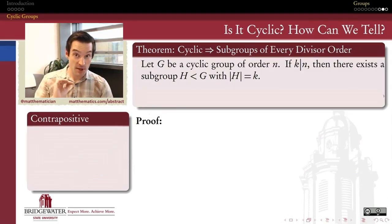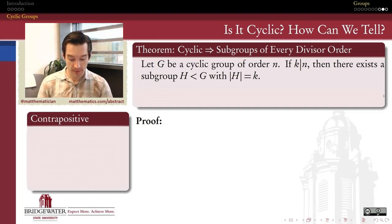We'll prove this theorem, which is a direct analog of the theorem that we just proved about the orders of elements. The theorem is that if I have a cyclic group G, let's say its order is n, so it's a finite cyclic group, and if I have any divisor k of n, then the theorem says there exists a subgroup H whose order is k.